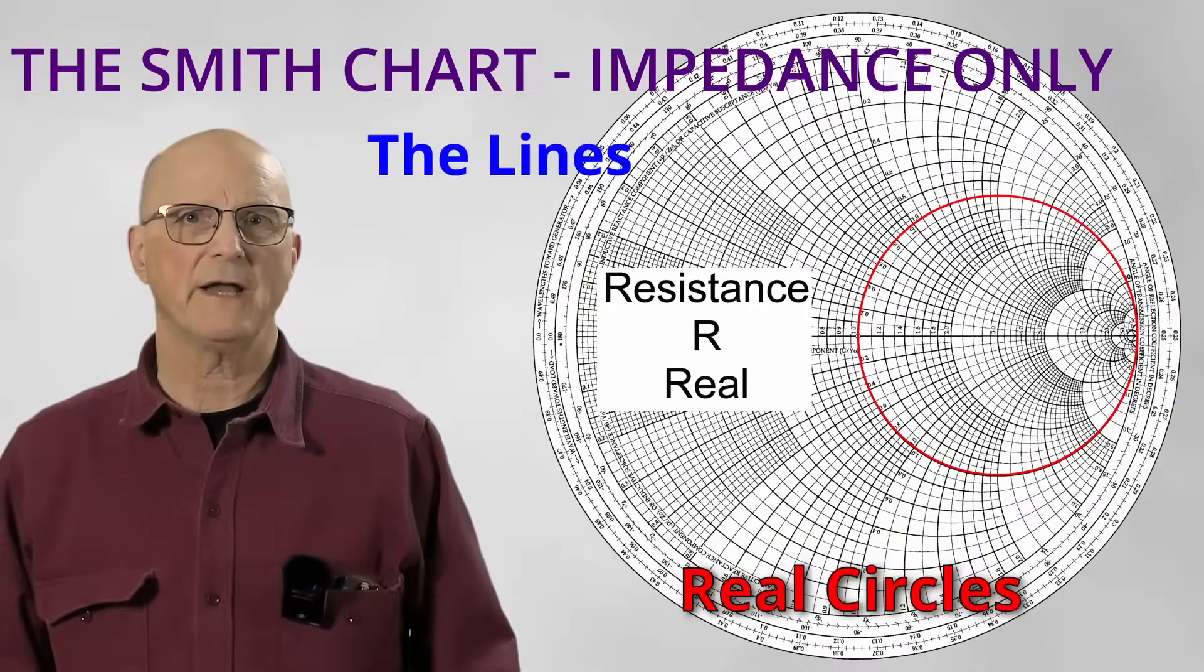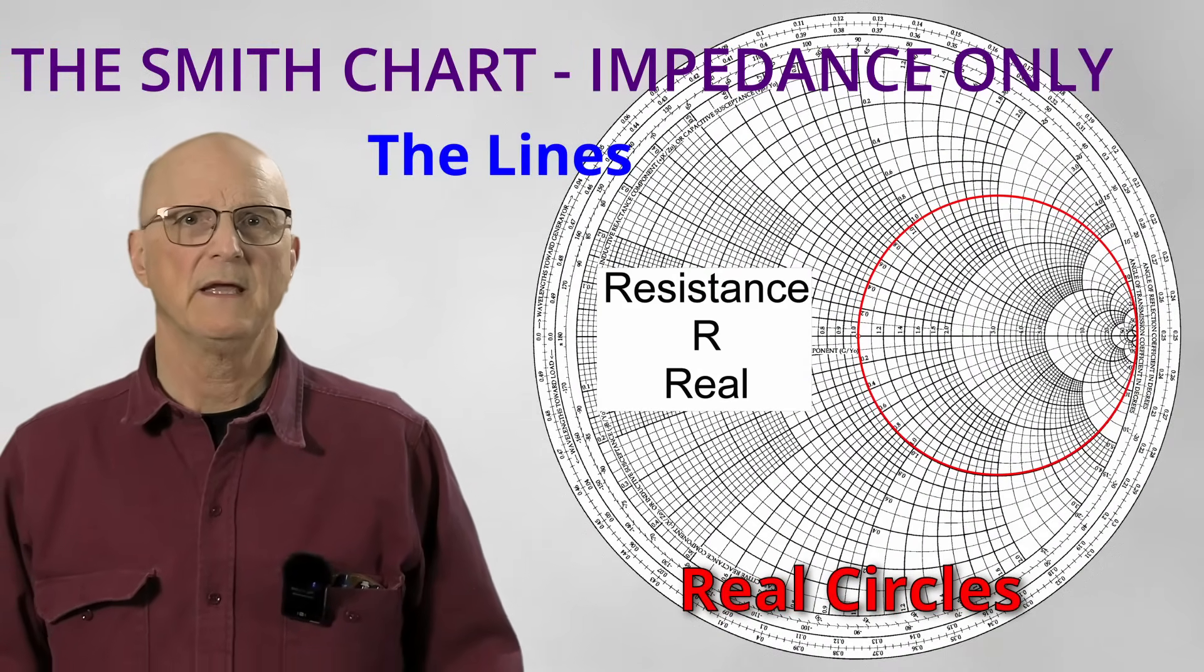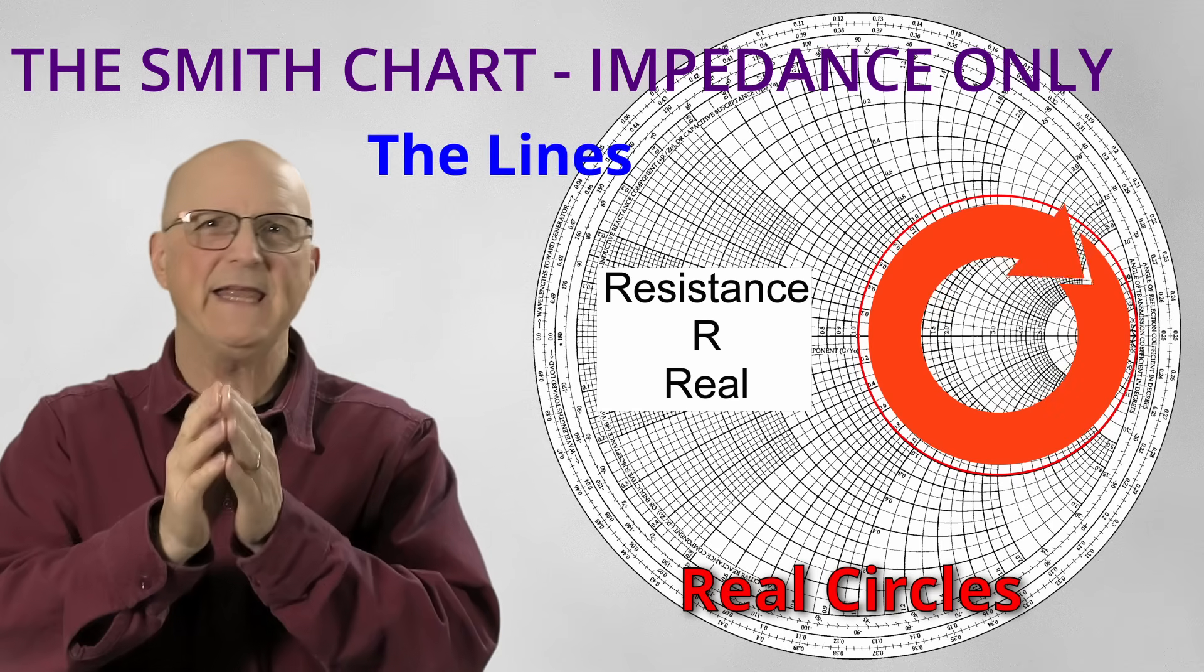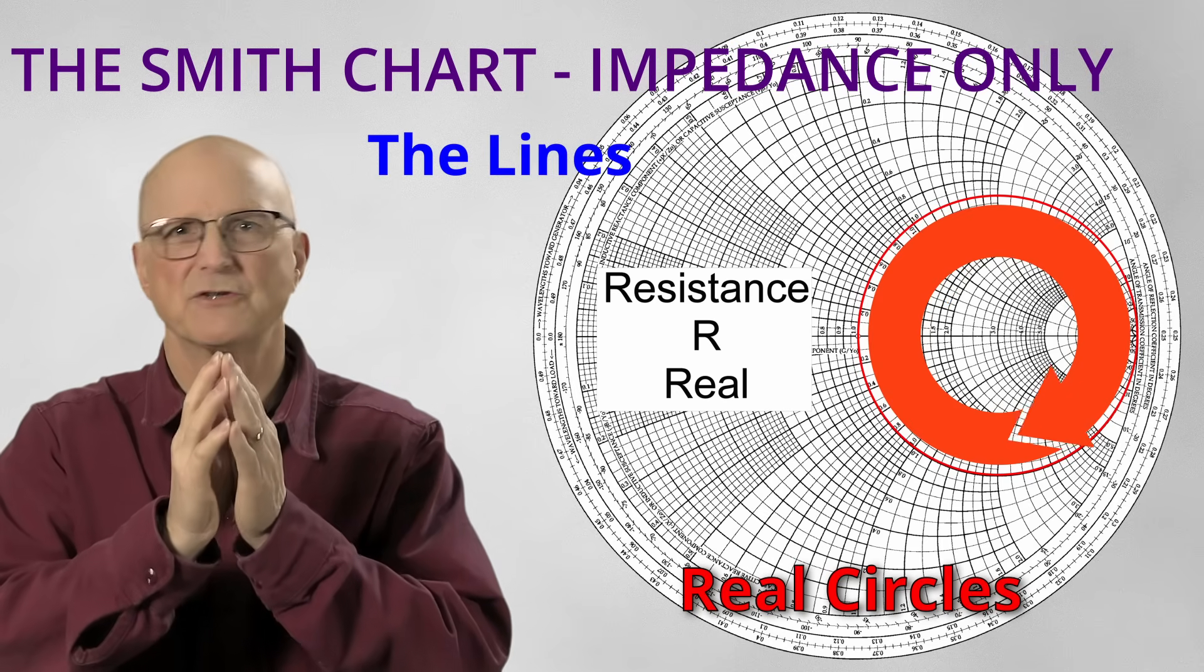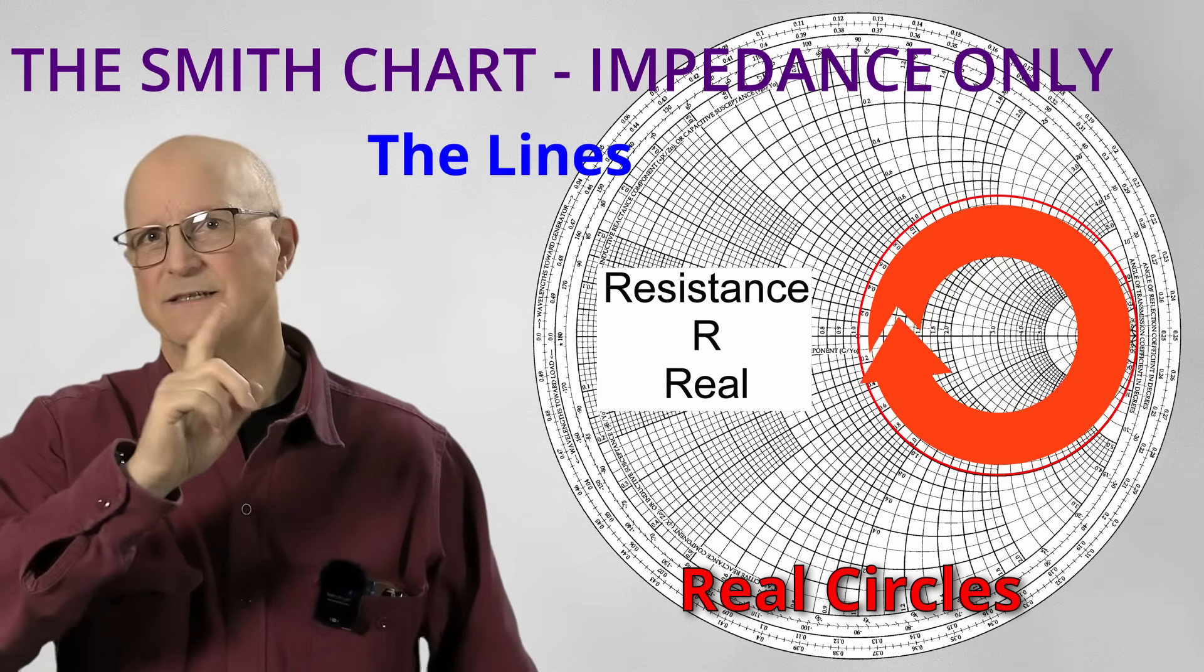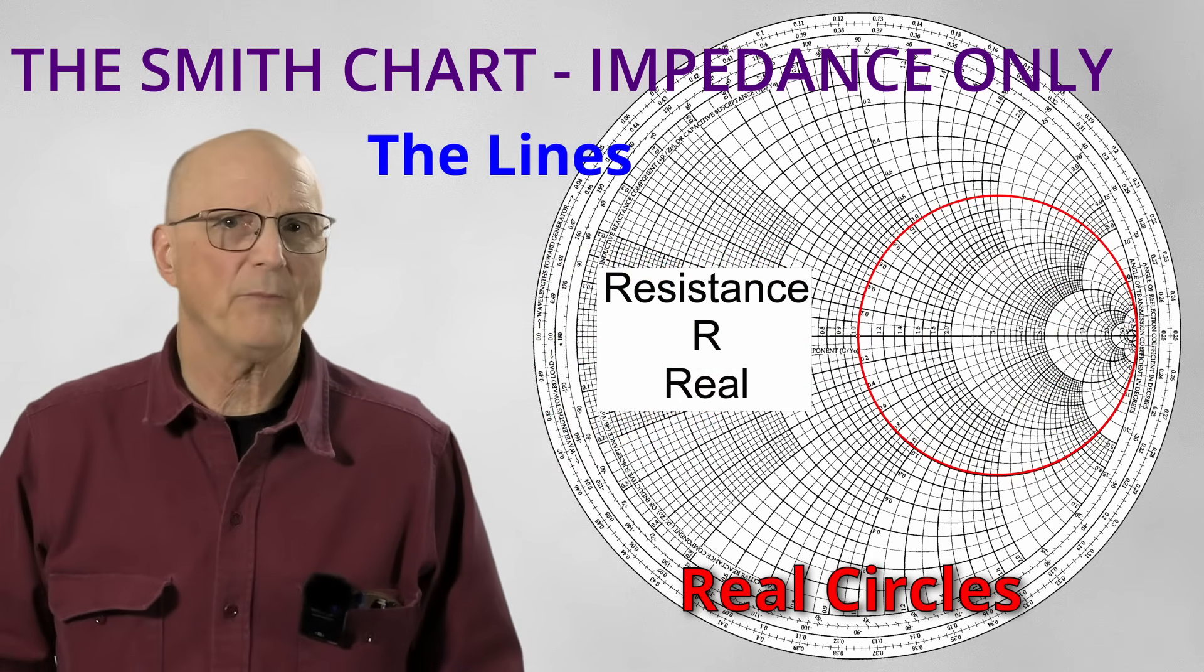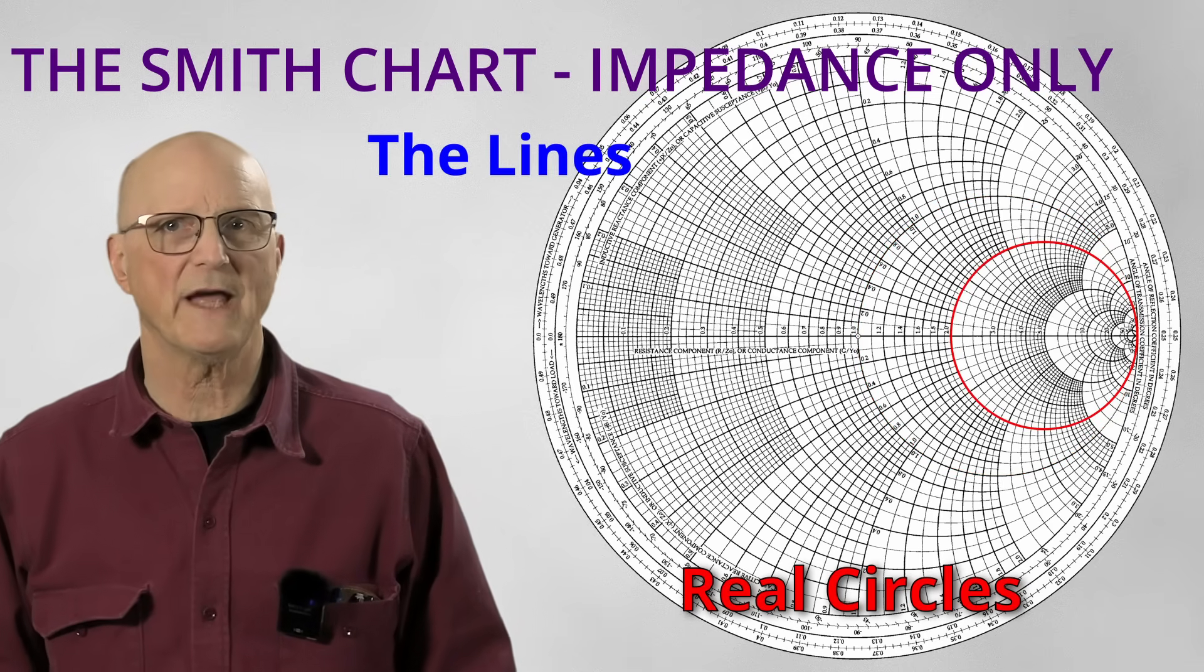These circles are for plotting the purely resistive or real part of the impedance. Here's a very important point. Pay close attention to this and remember this. As we move around any given resistance circle, the resistance does not change. The reactance will change, but the resistance does not. And this is why they are often referred to as constant resistance circles.